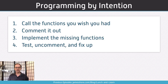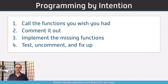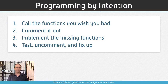Programming by intention answers the question of where we begin. It means writing the code that you wish you could write — you write your code as if all the code you need is already written. That will help you define what interfaces you need to write. Then you comment it out, implement the missing functions, come back, write the test, uncomment it, and fix it up.